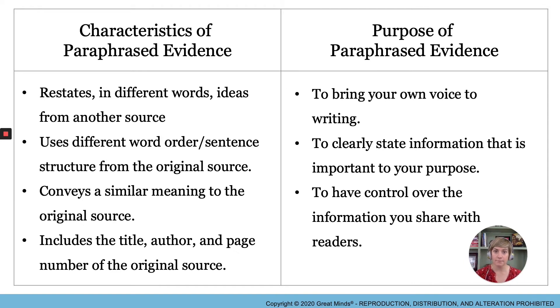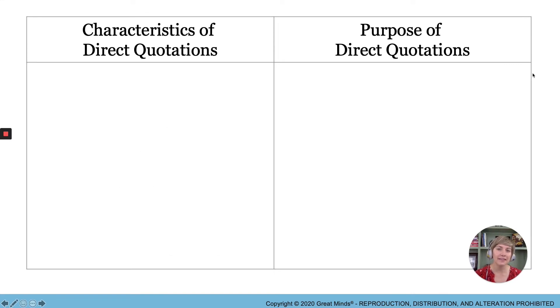Did you get it? All right, nice work. Now let's talk about direct quotations. Just like you made the t-chart for paraphrase, you're going to do the same thing on a clean page for direct quotations. So open to a clean page in your journal or in your electronic workspace and make a t-chart with these two headings. On the left side, characteristics of direct quotations. And on the right side, purpose of direct quotations. Pause the screen to get it set up now.